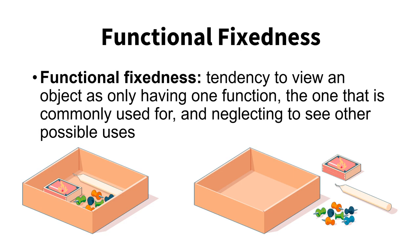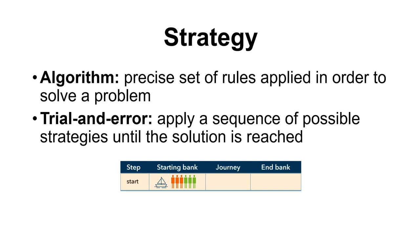Now we'll talk about potential strategies we can use to solve a problem. Typically, humans use trial and error problem solving, at least to get started. With trial and error, you apply a standard sequence of possible strategies until you reach the solution — you try option one, if that doesn't work you try option two, if that doesn't work you try option three, and so on until you find what works.